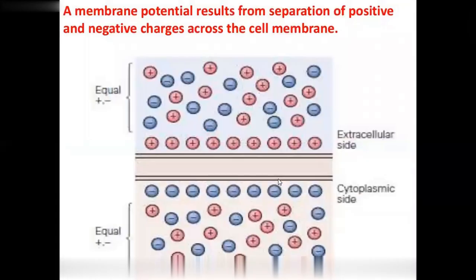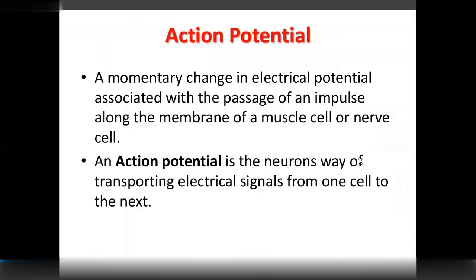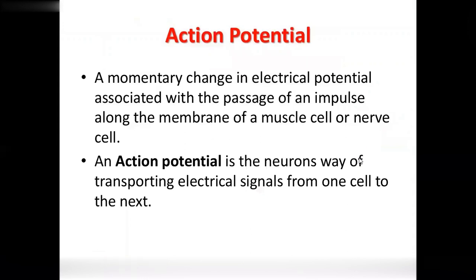Membrane potential results from separation of positive and negative charges across the membrane. When sodium-gated channels open, sodium rushes into the cell, making the inside positive — this initiates the action potential. A momentary change in electrical potential is associated with passage of an impulse along the membrane. Both muscle cells and nerve cells are electrically excitable.